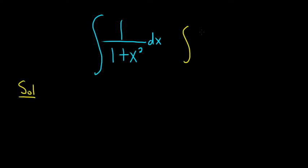There is a formula that tells you that if you have 1 over a squared plus x squared dx, this is equal to 1 over a times the arctan of x over a plus c.